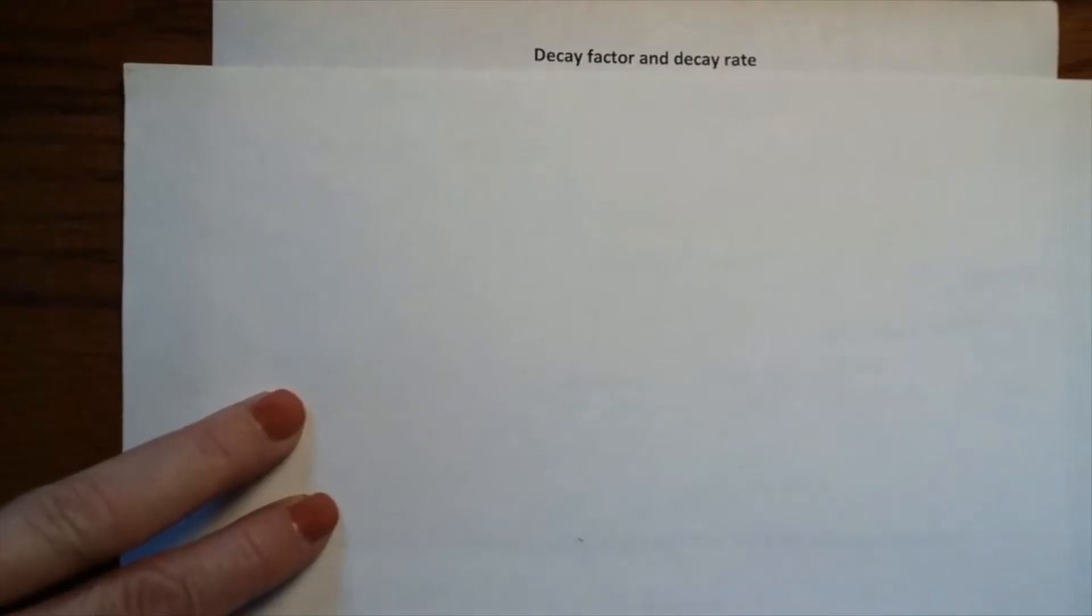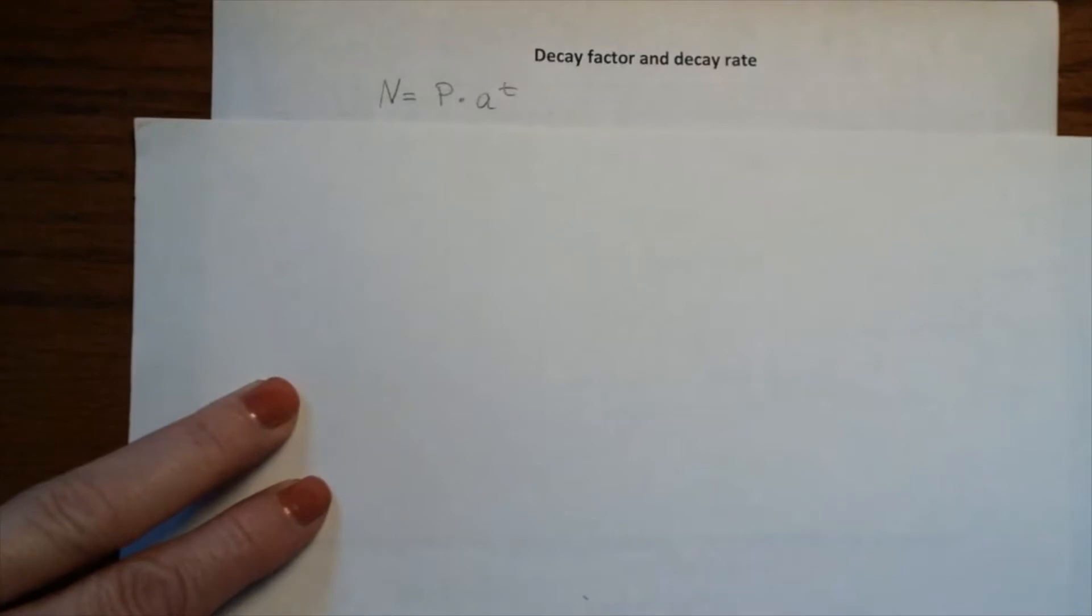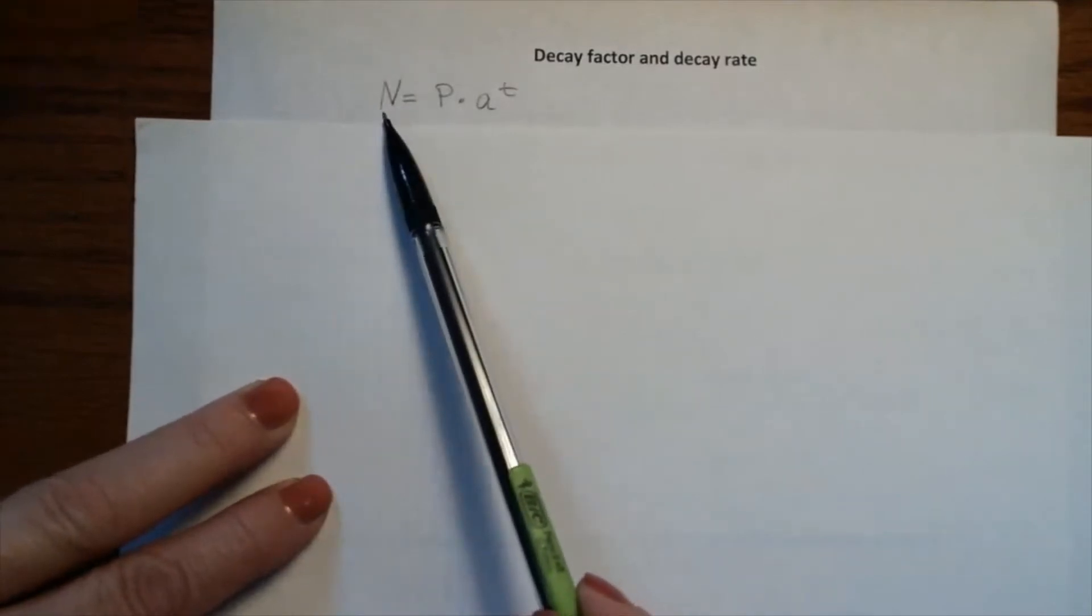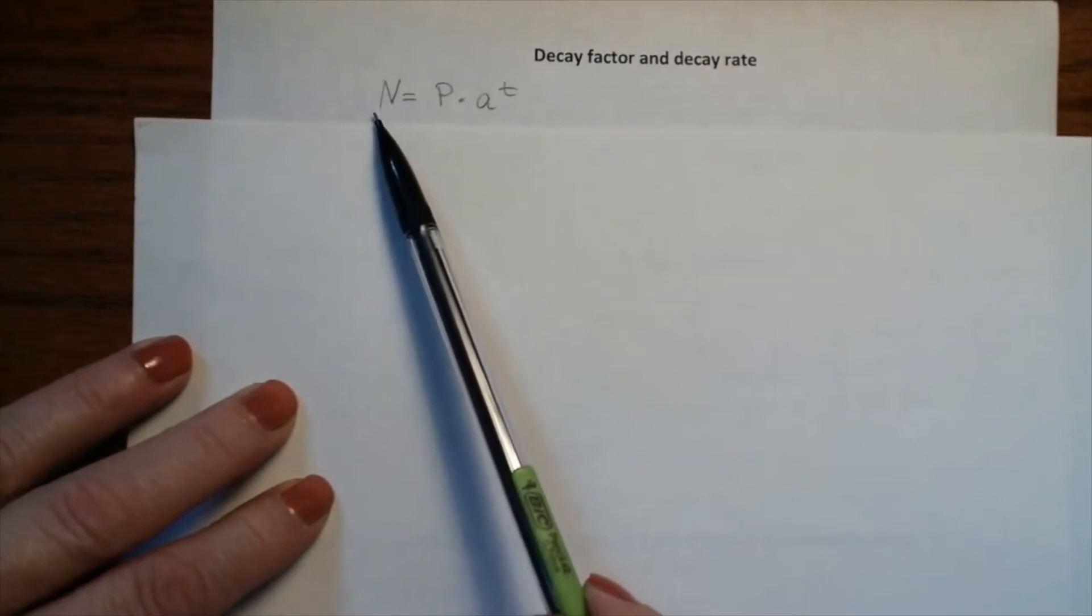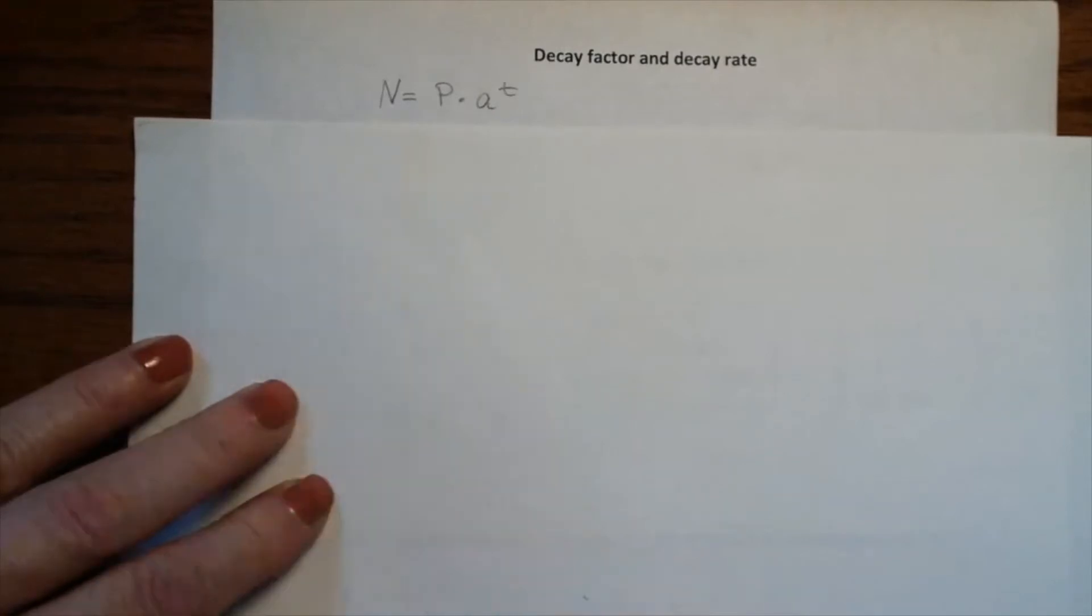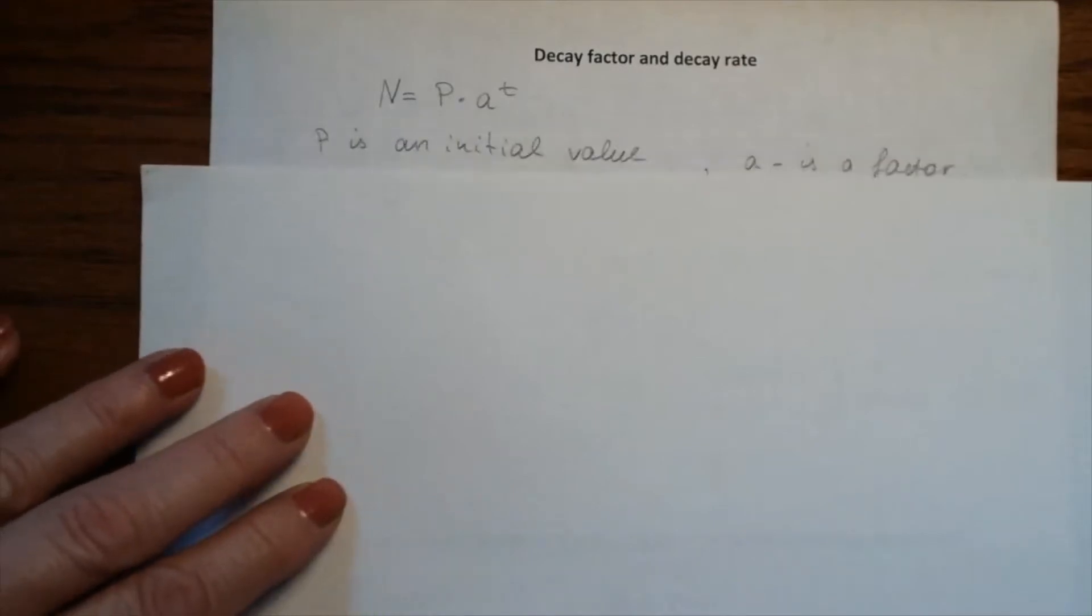In this video, we will learn about decay factor and decay rate. First, we'll remember the formula for an exponential function: N = P × a^t, where P is an initial value and a is a factor.